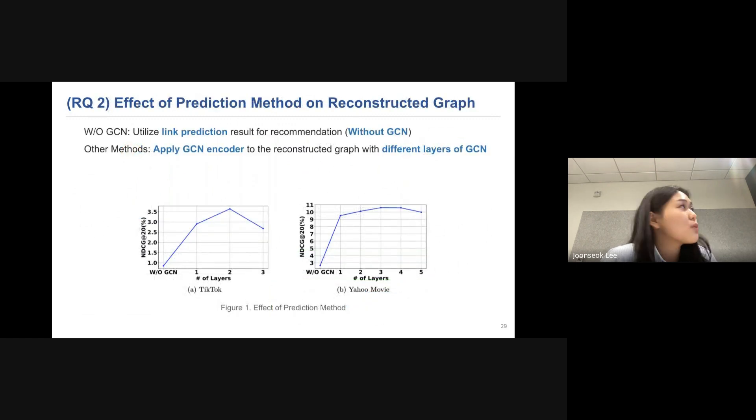And we also want to see the effect of the prediction method in reconstructed graph. And in here, without GCN means we utilize the link prediction result for recommendations. And the other method means we apply GCN encoder to the reconstructed graph with different layers of GCN. And if you see figure one, you can see using two layers or three layers shows the best result.